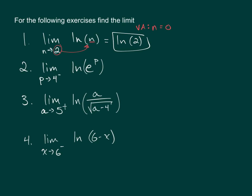Example 2: the limit as p approaches 4 from the left of the natural log of e to the p power. Remember that there's a property stating the natural log of e to some power is just equal to that power.